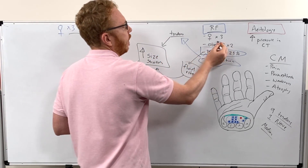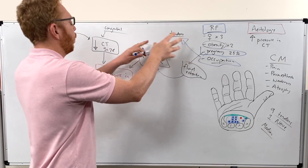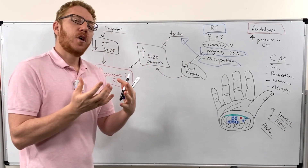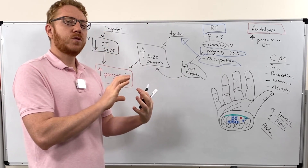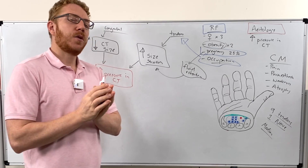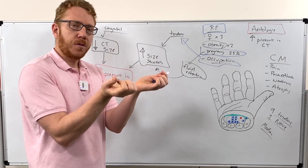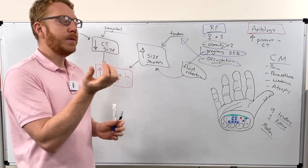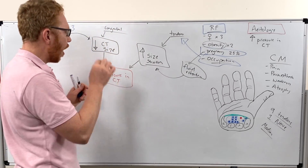Obesity is also a risk factor, though the literature isn't 100% sure how it fits causally. There seems to be a stratification: younger obese people tend to have unilateral carpal tunnel syndrome, while older obese individuals tend to have it bilaterally. So the mechanism linking obesity to the cause remains somewhat unclear.